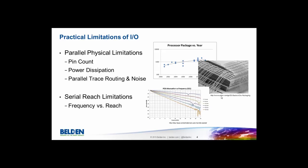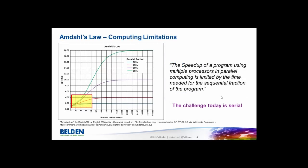There are limitations for how much parallel IO we can get in and out, and lots of limitations in terms of trace and routing noise as well. That has to do with serial reach — if we try to run faster serial protocols off the chip, we run into problems with how far we can actually reach. The migration from 10 gig to 25 gig lane rates is a big jump, and we've had to shorten trace lengths significantly because the frequency is higher.